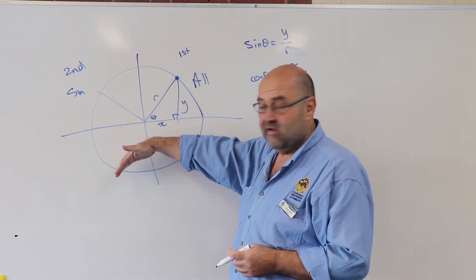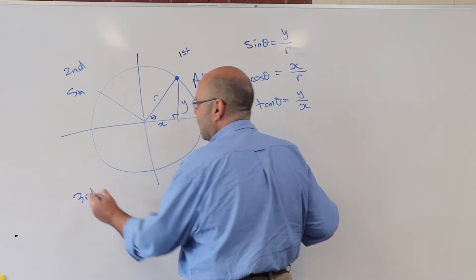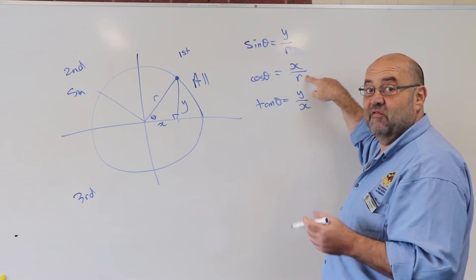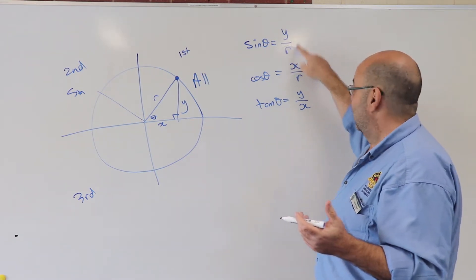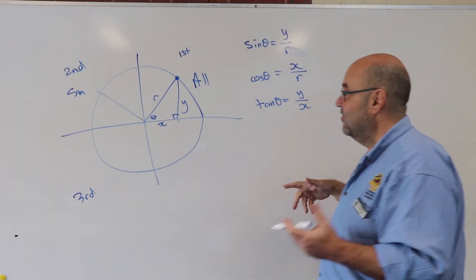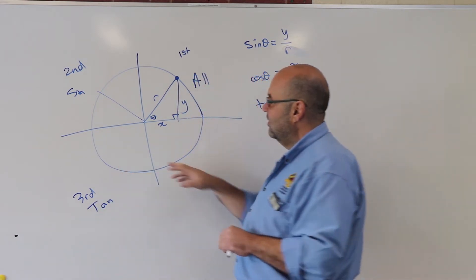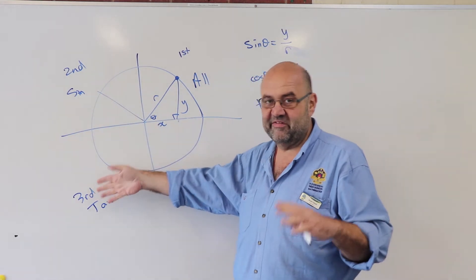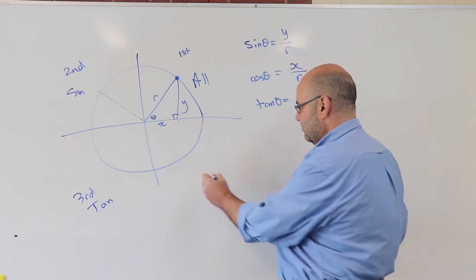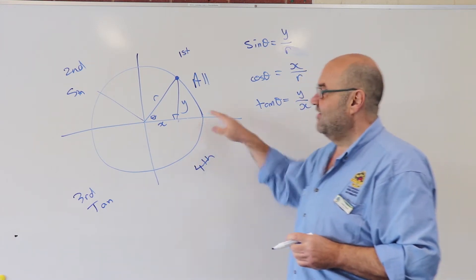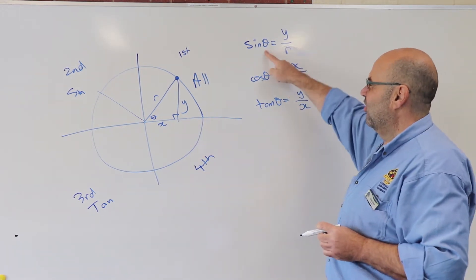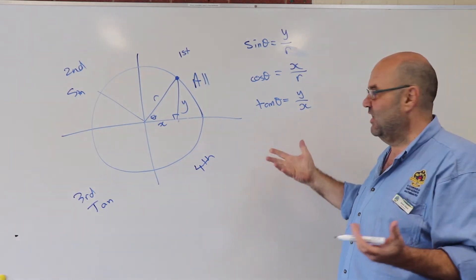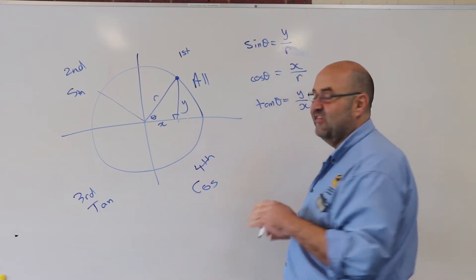Extending into the third quadrant: x is negative and y is negative. If x is negative, cos is negative. If y is negative, sine is negative. But negative divided by negative is positive, so tan is positive in the third quadrant. In the fourth quadrant, x is positive and y is negative. So sine is negative, cos is positive, and tan is negative — only cos is positive in the fourth quadrant.